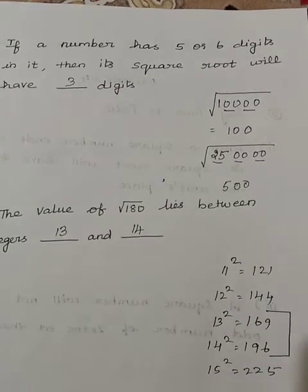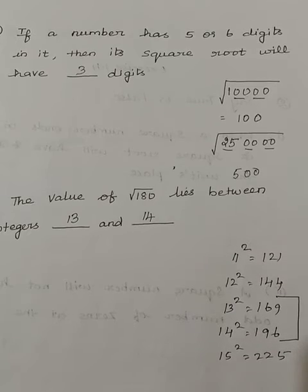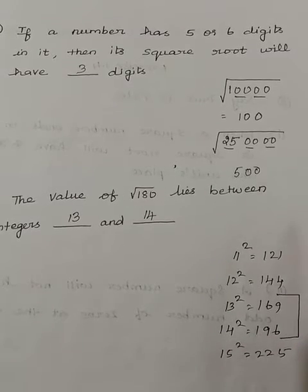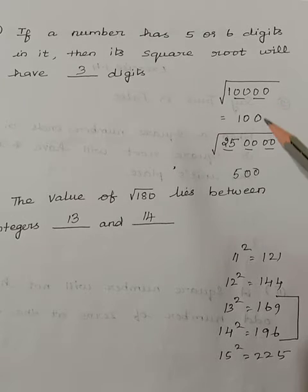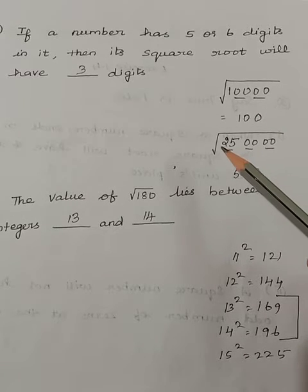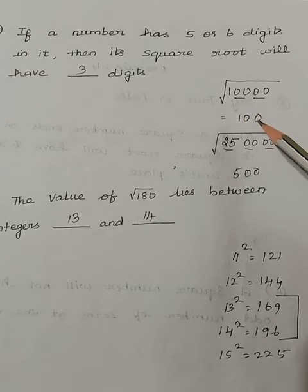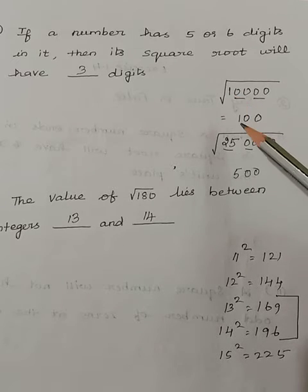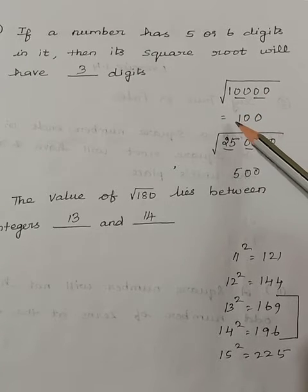Next is Roman letter 4. If a number has 5 or 6 digits in it, then its square root will be? Now let us take one 5-digit number 10,000 and a 6-digit number 2,50,000. Now we will divide into pairs. For the two zeros in the perfect square, I can write 1, 0. For the 5-digit number, the square root has 3 digits.